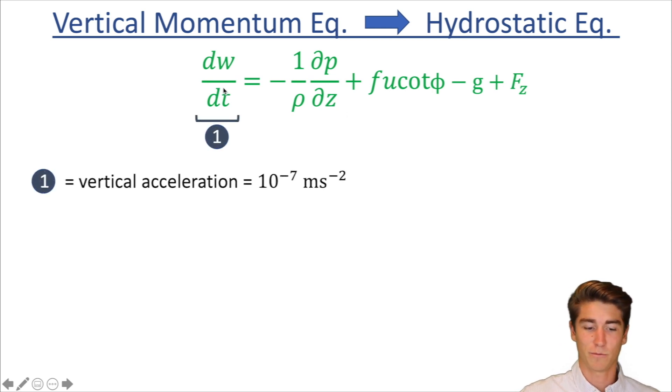So we're going to start with this first term here. This is going to be vertical acceleration. If you watch my video on the horizontal momentum equation you'll remember that w is just velocity in the vertical direction, going up into space. So if you have velocity over a change in time that's literally the definition of acceleration. That one's just going to be vertical acceleration.